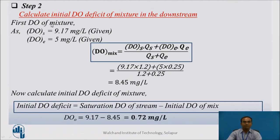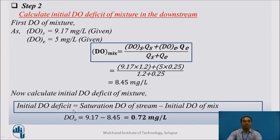Step 2: Find the initial DO deficit of the mixture. We calculate the initial DO at the point where the effluent joins the stream, using the same mixing formula but with DO values instead of BOD. Putting in the values gives an initial DO of the mixture of 8.45 mg/L. The initial DO deficit is then: saturation DO minus initial DO of mix = 9.17 − 8.45 = 0.72 mg/L.